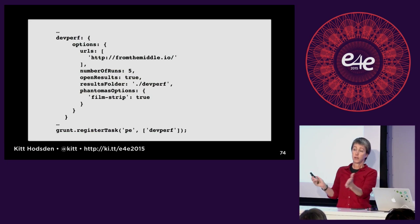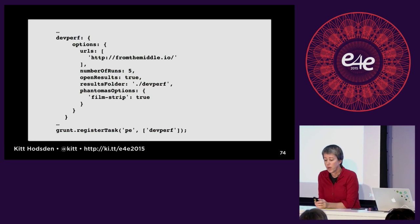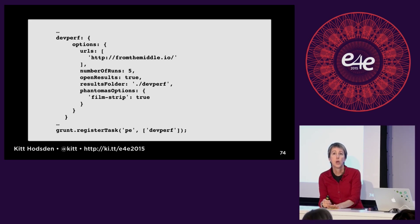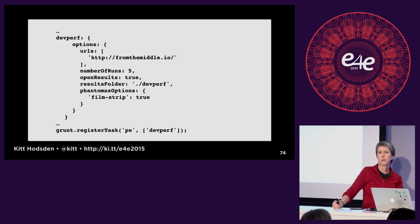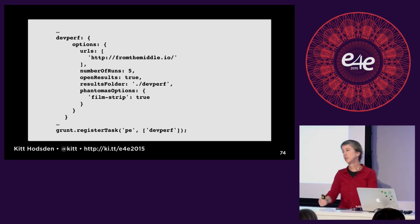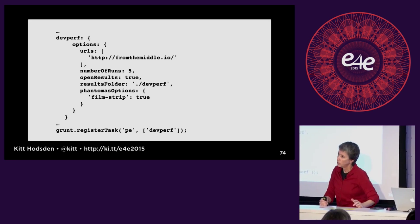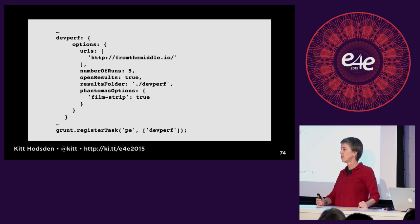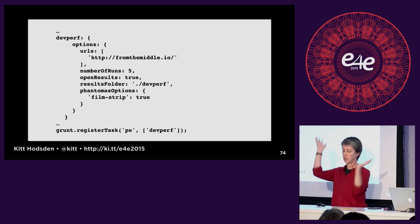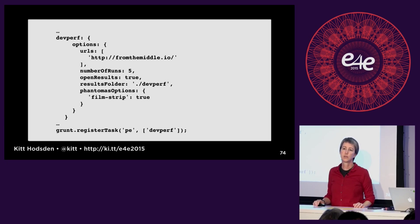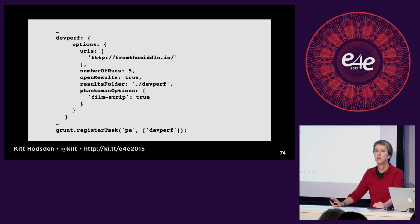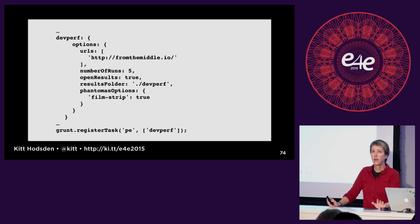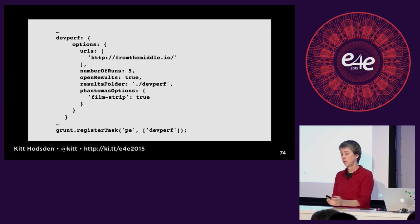A more realistic configuration looks like this. You have your URLs — what you're testing performance on. You want a meaningful number of runs. A data point of one is a data point of none, according to my college professor — you don't have enough information and don't know if you have a straight line. So you run multiple runs, take the median, and say that is our performance. Set number of runs to five, and output the results to a folder.